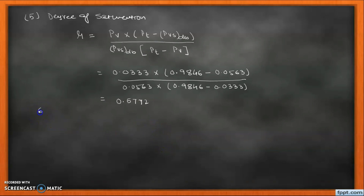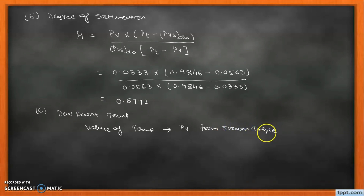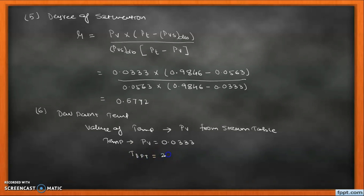Now the dew point temperature. The dew point temperature is the temperature corresponding to the vapor pressure. From the steam table we find the temperature at vapor pressure 0.0333 bar. If the direct value is not available, we use interpolation. The dew point temperature DPT is 26 degrees centigrade.